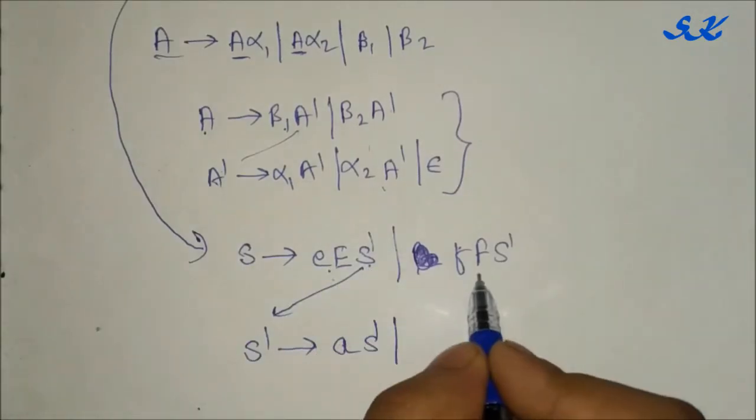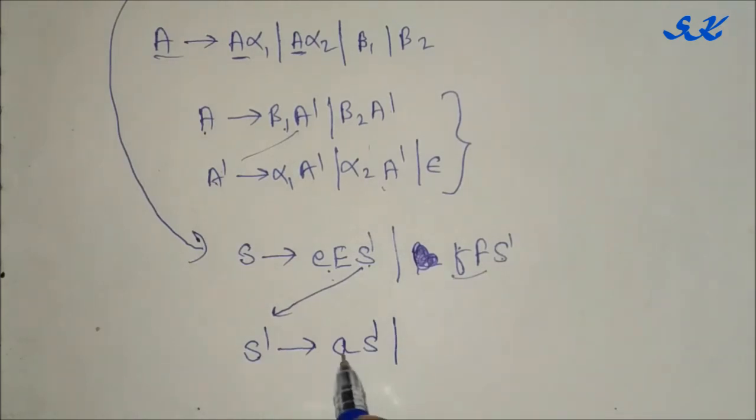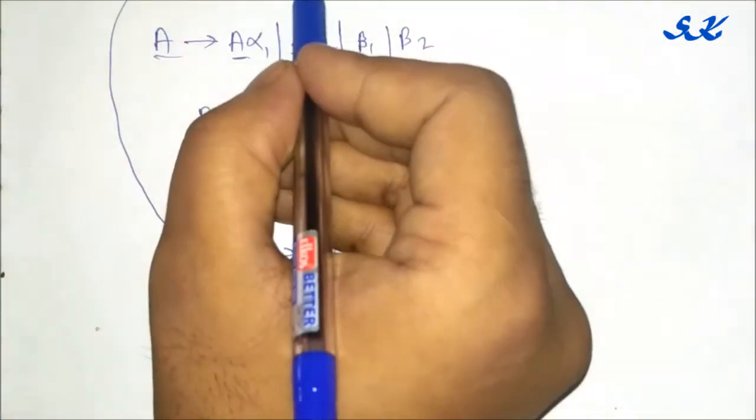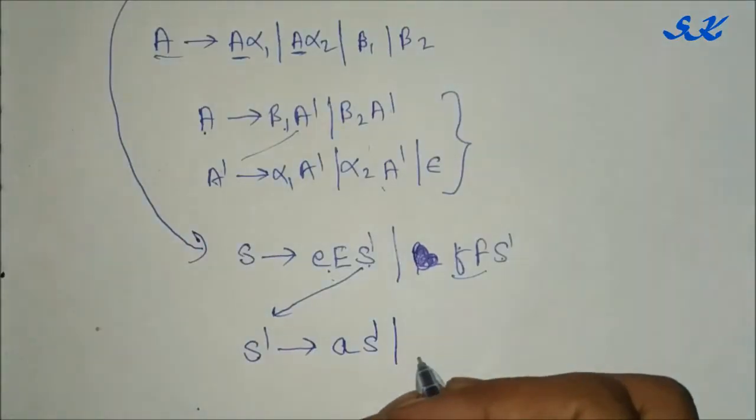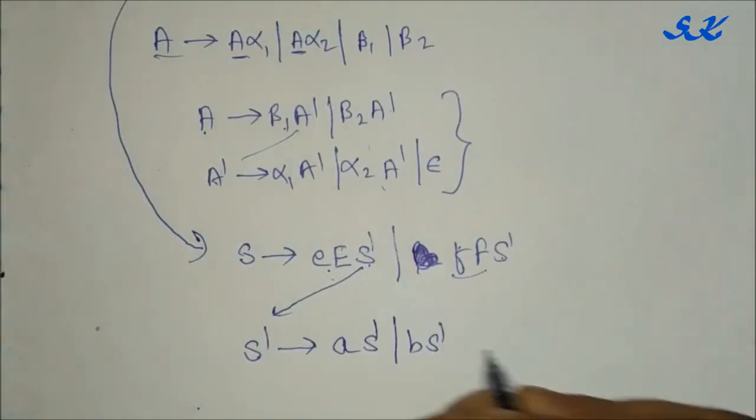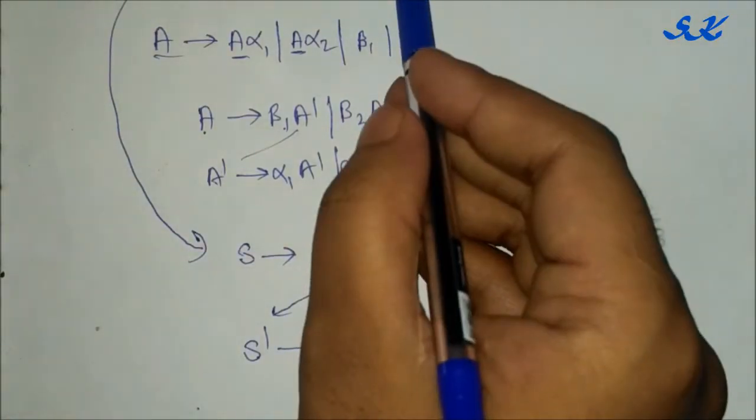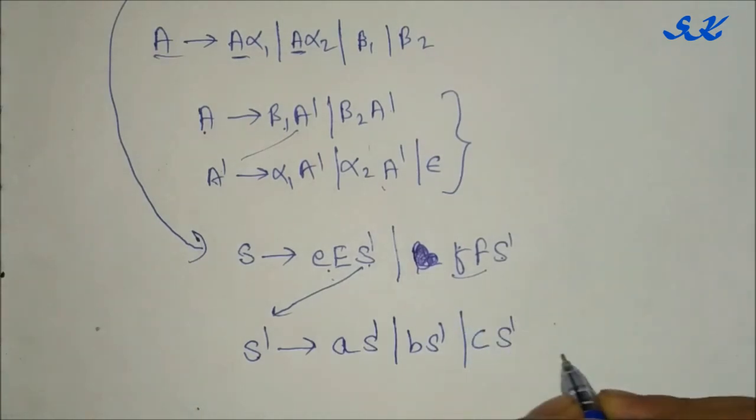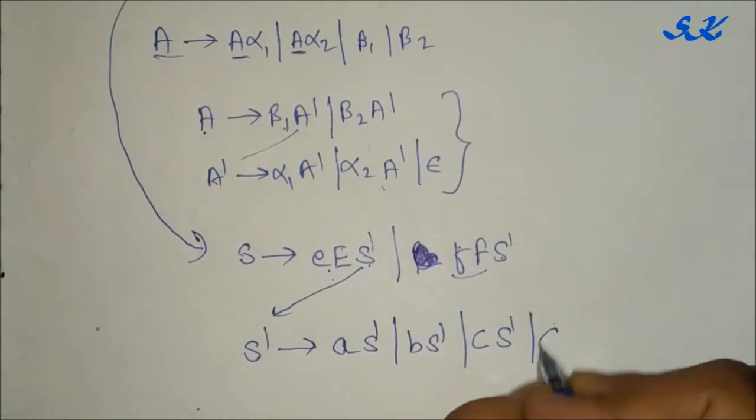Again, S dash will be alpha 1 S dash. Alpha 1 is A. And again, alpha 2 is B and alpha 1 S dash. Alpha 3 is C, C S dash, and epsilon.